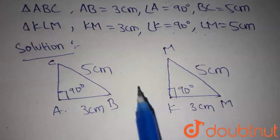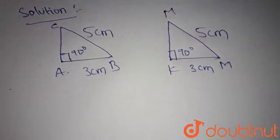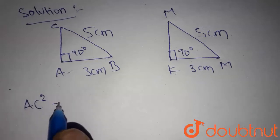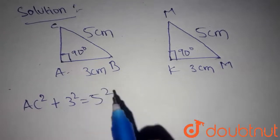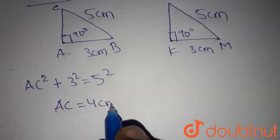KM is 3 cm, angle K is 90 degrees, LM is 5 cm. Since this is a right-angled triangle, we can write as AC² plus 3² is equal to 5². Then we get AC as 4 cm.